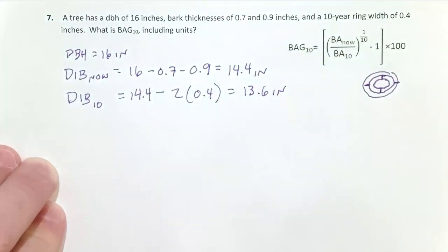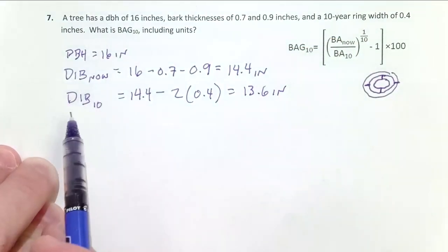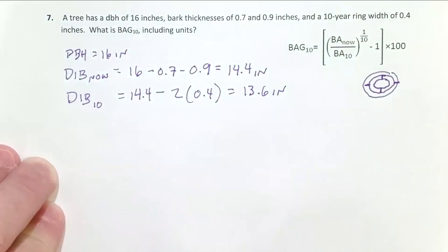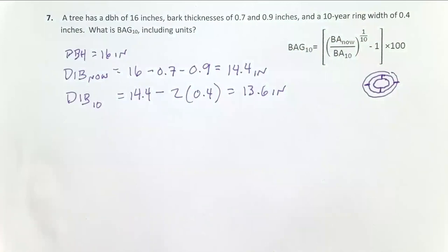Okay, so I have my two relevant diameters: diameter inside the bark now and diameter inside the bark 10 years ago. Next up, what I need to do is convert those diameters to basal areas.